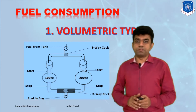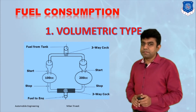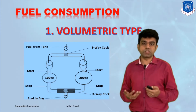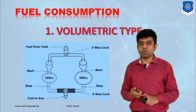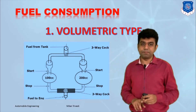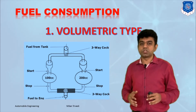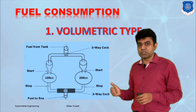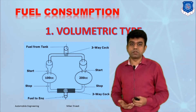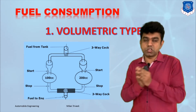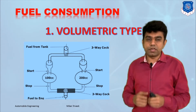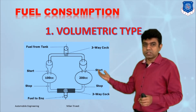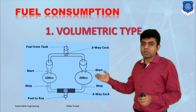Now let us talk about fuel consumption measurement. In general, we have two different methods to measure the amount of fuel going into the engine: the first is the volumetric type and the second is the gravimetric type. The more accurate one is the gravimetric type. The volumetric method is useful but often does not give accurate results due to variations in density.